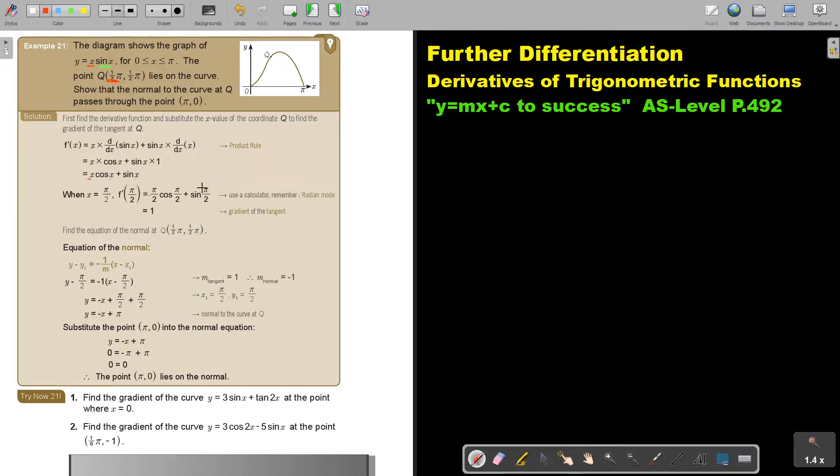If we come to π over 6 or 1 third π, then we will use the triangle. But for this one, the best will be to just use the calculator. Just remember to put it on the radian mode. Then just press π over 2 times cos π over 2 plus sin π over 2. Now, this will become 0 and this will become 1. So the gradient will be 1.